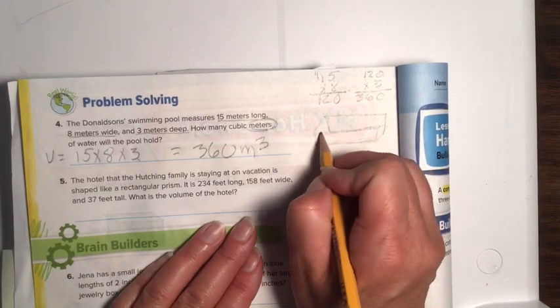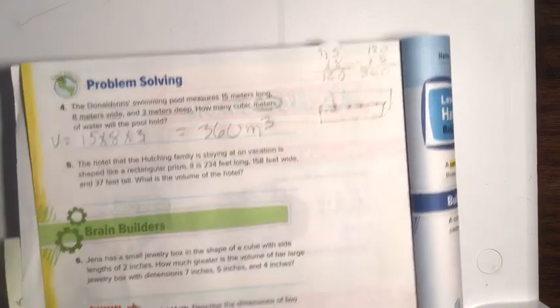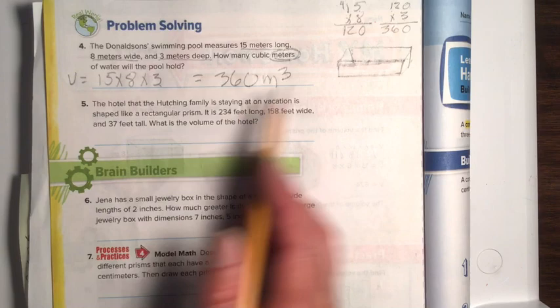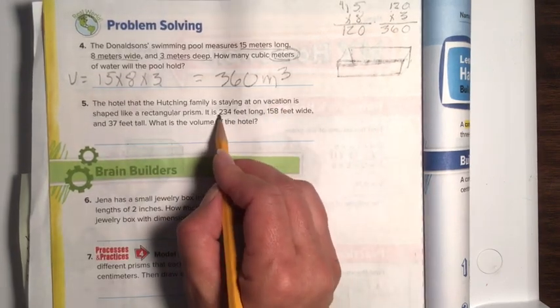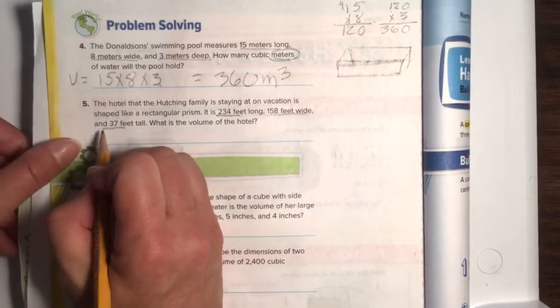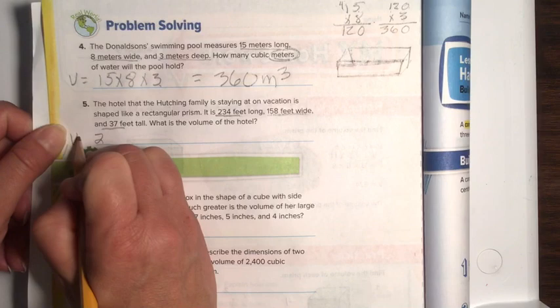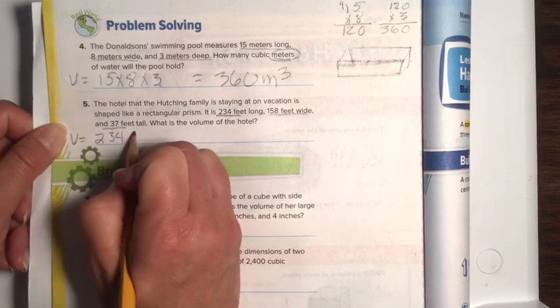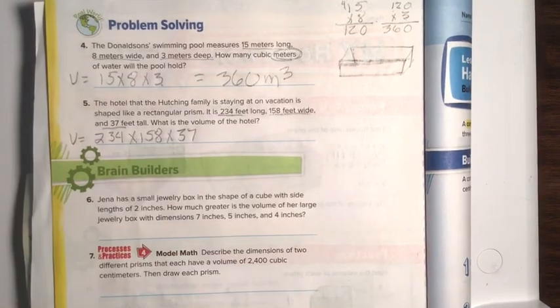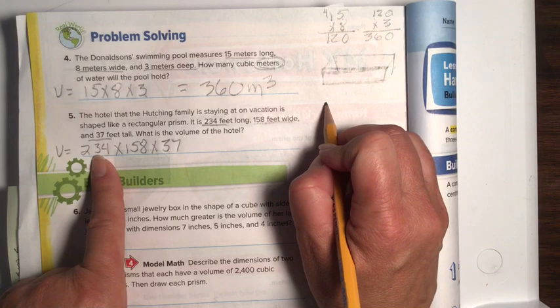Boy, that pool is struggling. There we go. That looks a little better, doesn't it? Next, number 5. The hotel that the Hutchinson family is staying at on vacation is shaped like a rectangular prism. That's kind of like what we drew there. It is 234 feet long, 158 feet wide, and 37 feet tall. What is the volume of the hotel? Okay, so it's like that, but standing up straight. So, let's do volume is going to equal 234 times 158 times 37.